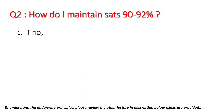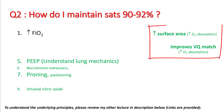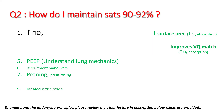The first step to maintain the SATs is increasing your FiO2. Most diseases cause hypoxemia by decreasing surface area or worsening VQ matching. You have a couple of ways to improve both of these, including PEEP, recruitment maneuvers, proning, positioning, and inhaled nitric oxide.